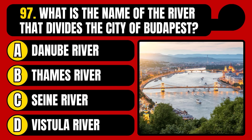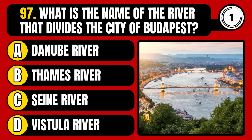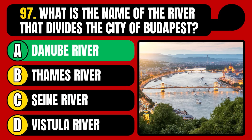What is the name of the river that divides the city of Budapest? Danube River, Thames River, Seine River, or Vistula River? The correct answer is option A, Danube River.